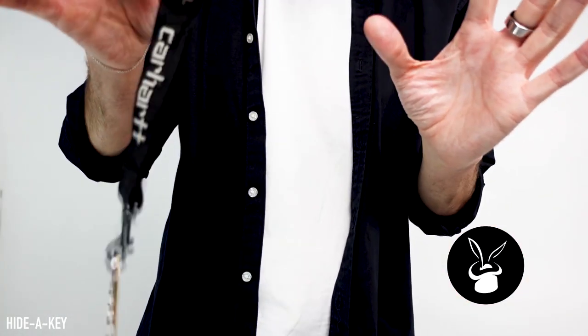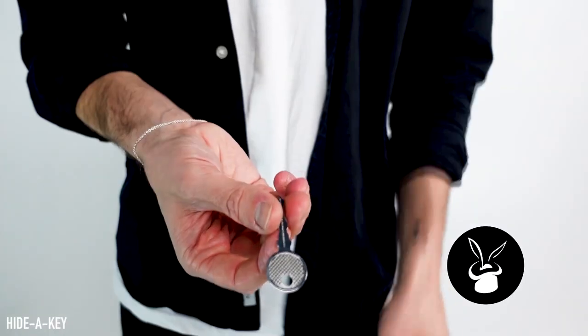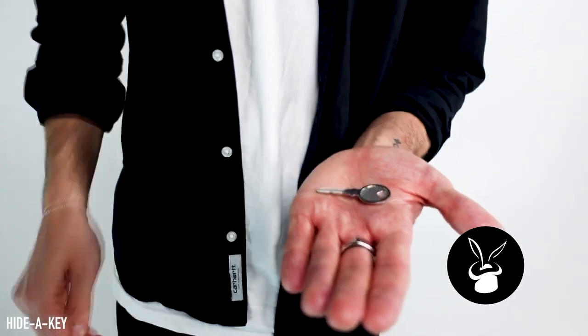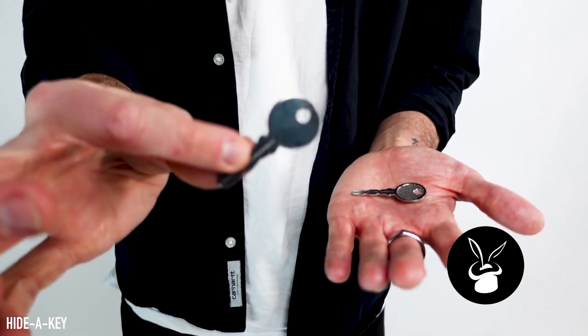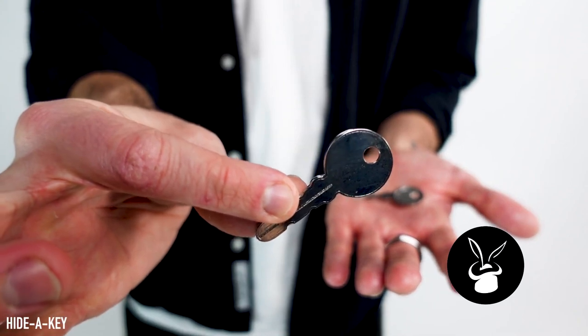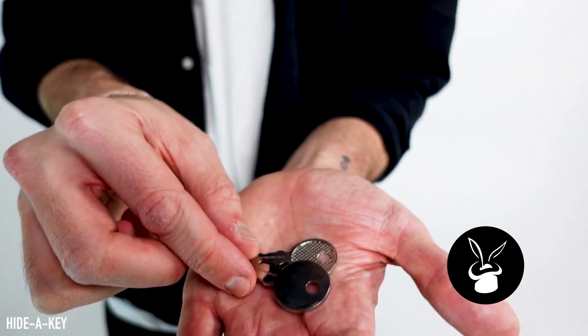The other way you could do this trick is you could do it in reverse. You can show the key ring and say, look, there's two keys. You place it in their hands. You bring out another key, a third key, vanish it, go back to their hands. They open their hands and now there's three keys on the key ring in their hands.